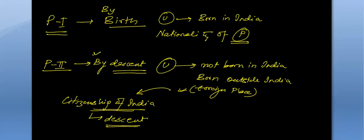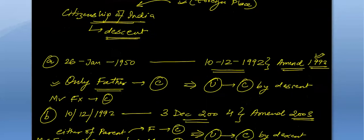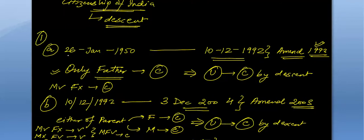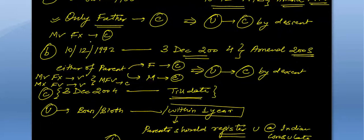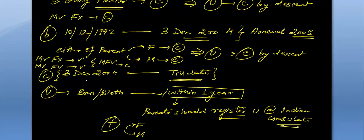Let's revise. We were talking about citizenship by descent — if you are not born in India but still want citizenship of India. There were three cases. First case: born between 26th January 1950 to 10th December 1992 — only if your father is a citizen of India can you claim citizenship by descent. Second case: born between 10th December 1992 to 3rd December 2004 — either of your parents must be a citizen of India, giving equal grounds to mother and father.